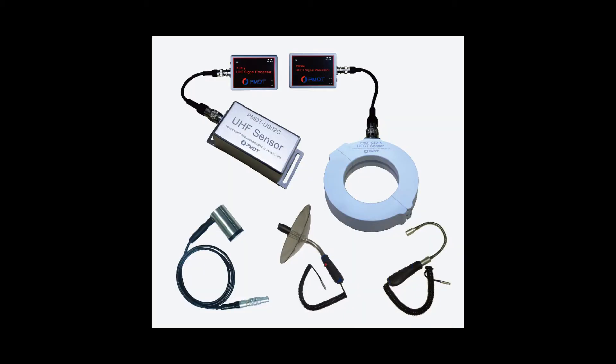The P-Detector employs five detection methods: the AE contact sensor, three ultrasonic sensors, a TEV, UHF, and HFCT sensor.